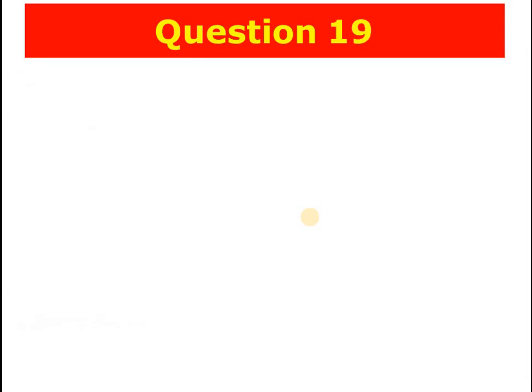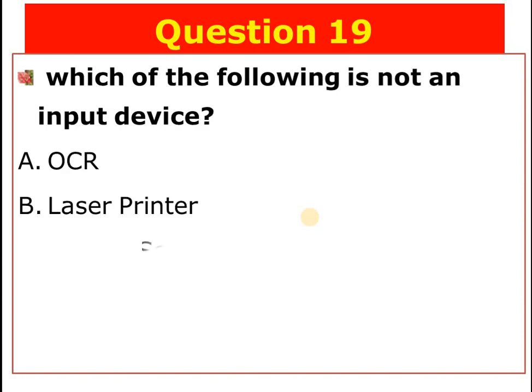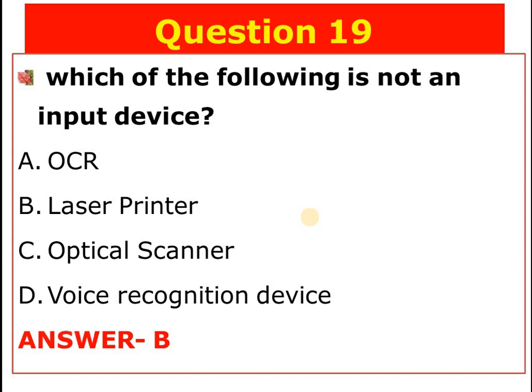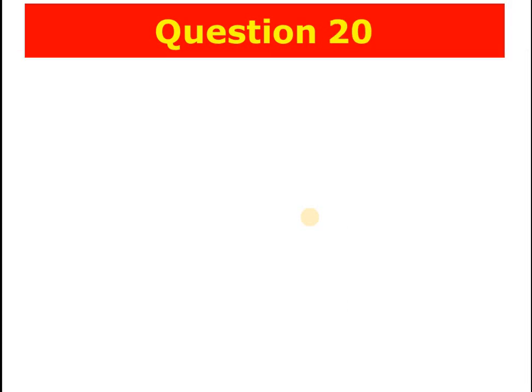Question number nineteen: Which of the following is not an input device? A) OCR, B) Laser printer, C) Optical scanner, D) Voice recognition device. The answer is B — laser printer is not an input device; rather, it is an output device.